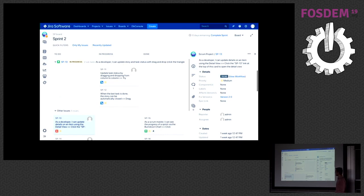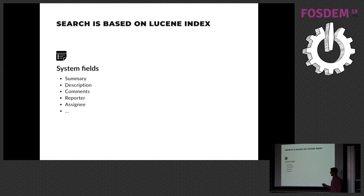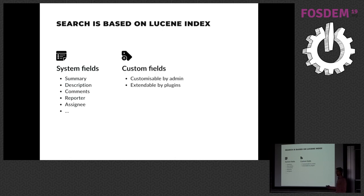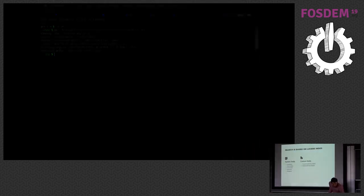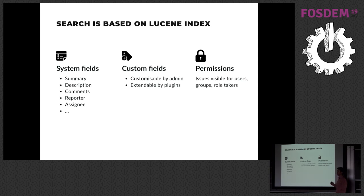This search is based on Lucene — we have an index and we put all the fields there. We have system fields which come with JIRA out of the box, such as summary, description, comments, who created the issue, and who is assigned to it. We also have custom fields configurable by admins — fields like dates, text, or numbers — and these can also be extended by plugins, so plugin vendors can provide any type of custom field you can dream of.